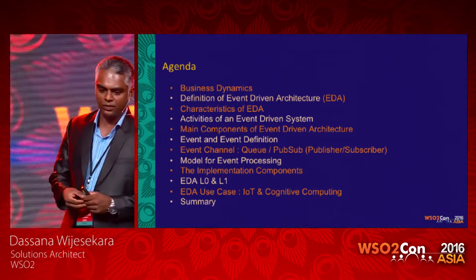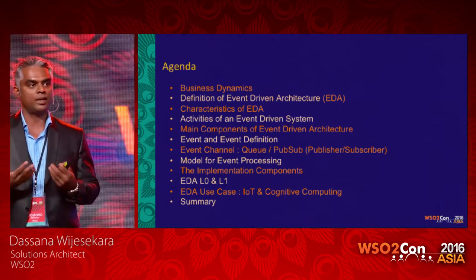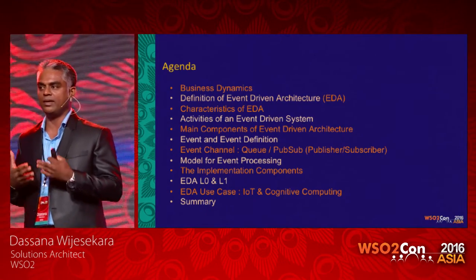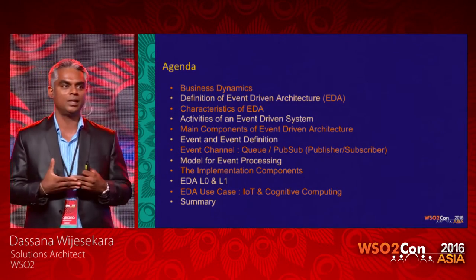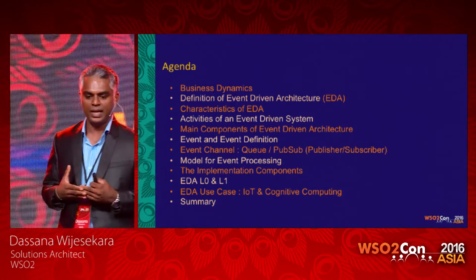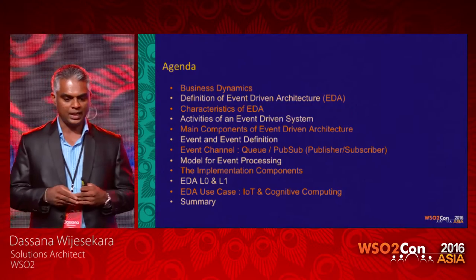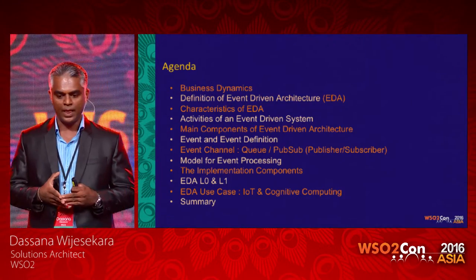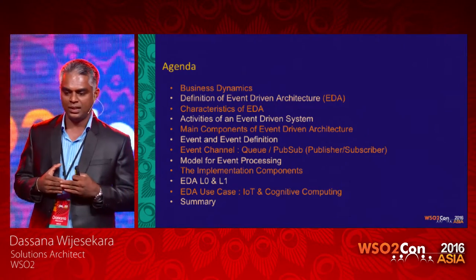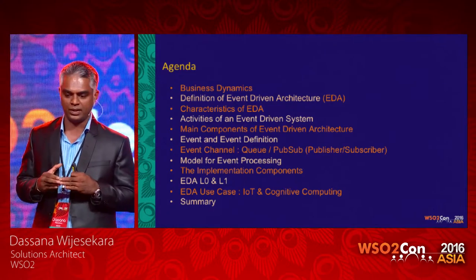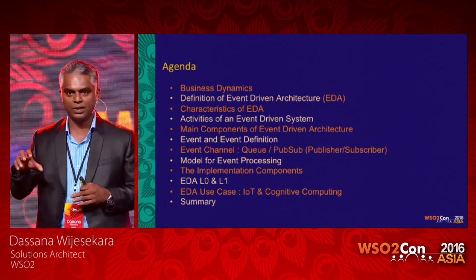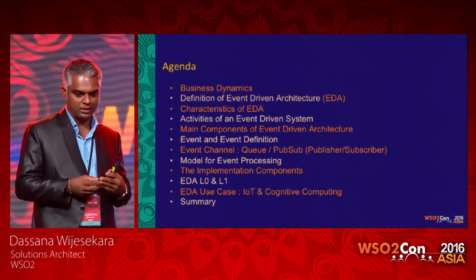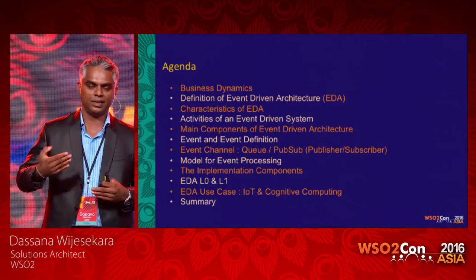Let's go to the agenda. First, let's look at what are business dynamics — the business pressures against enterprises, and how we can overcome them, and how event-driven or message-oriented systems can help enterprises become more adaptive. Then we'll look at the definition of EDA and the different characteristics of EDA which differentiate it from other architecture styles.